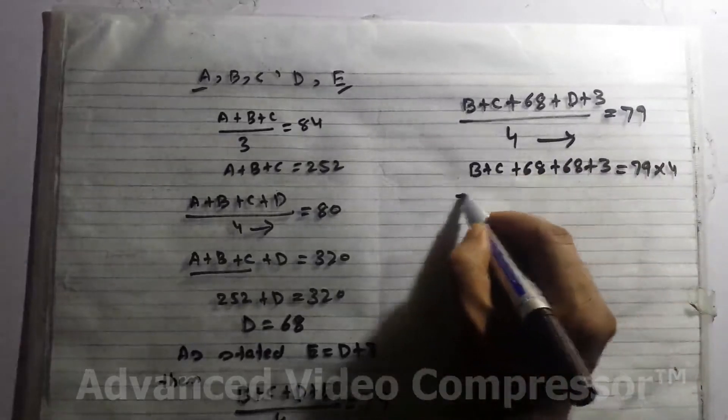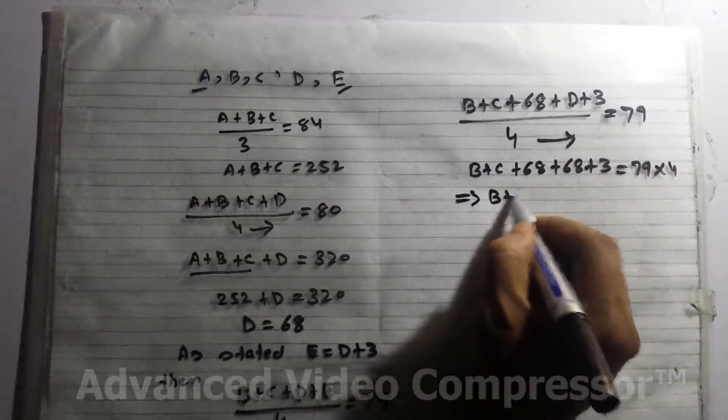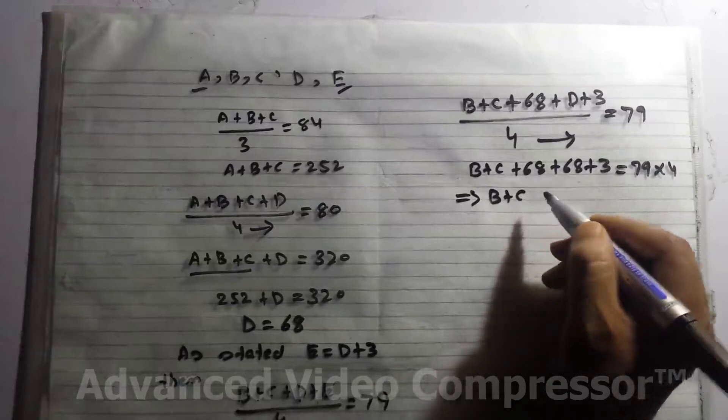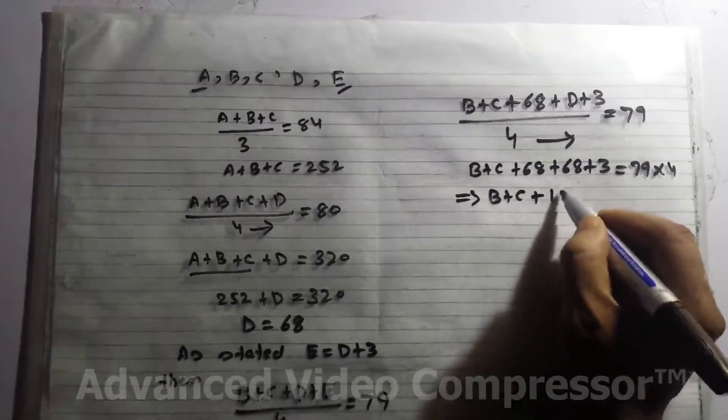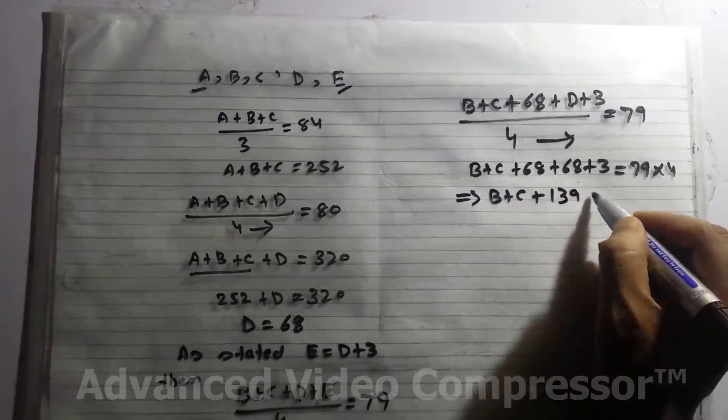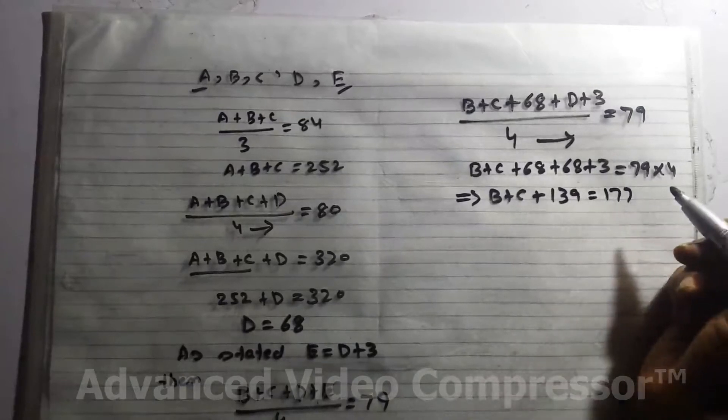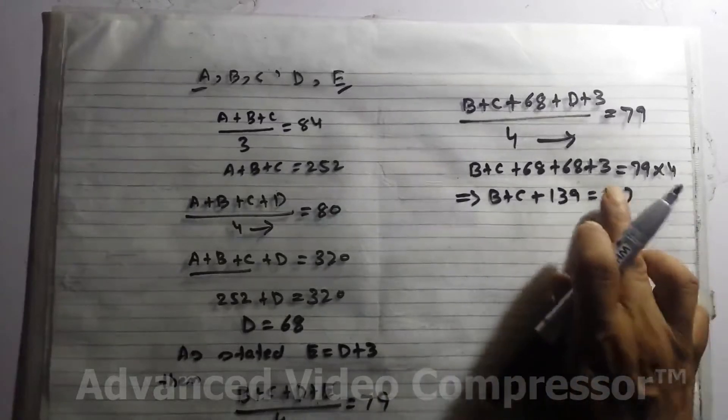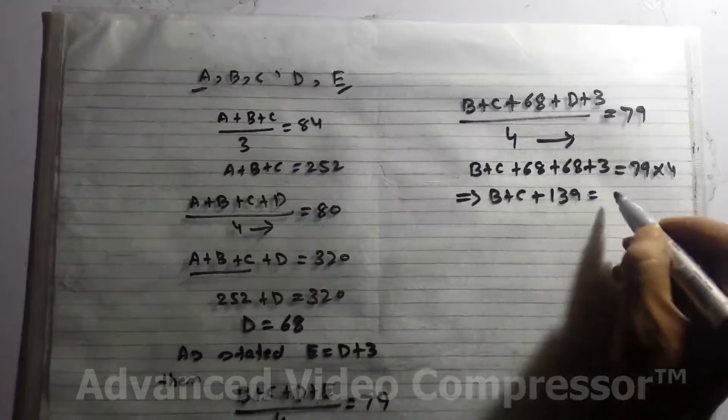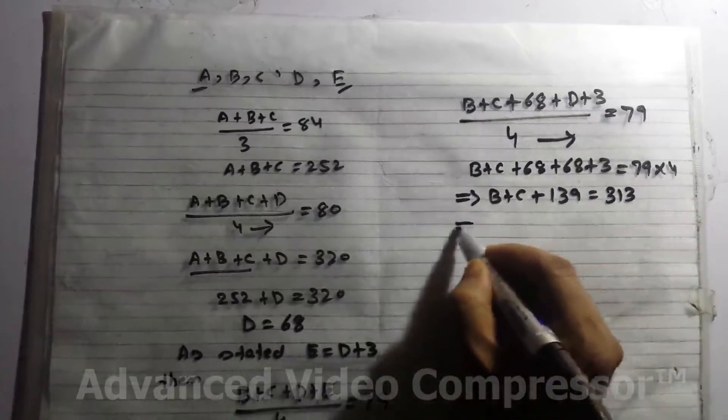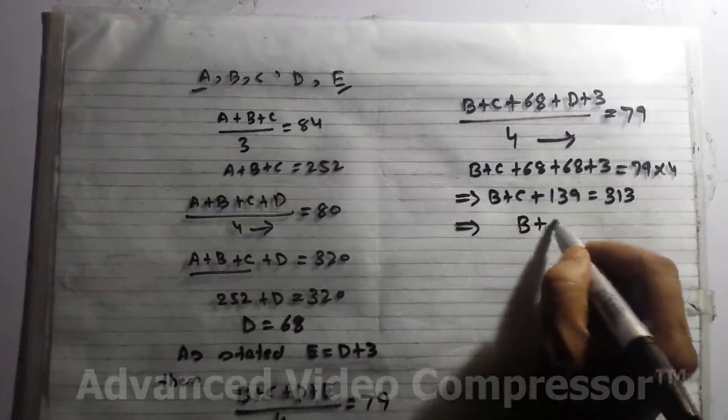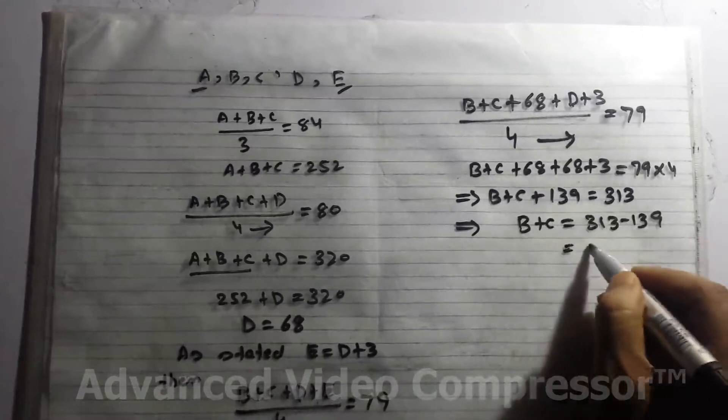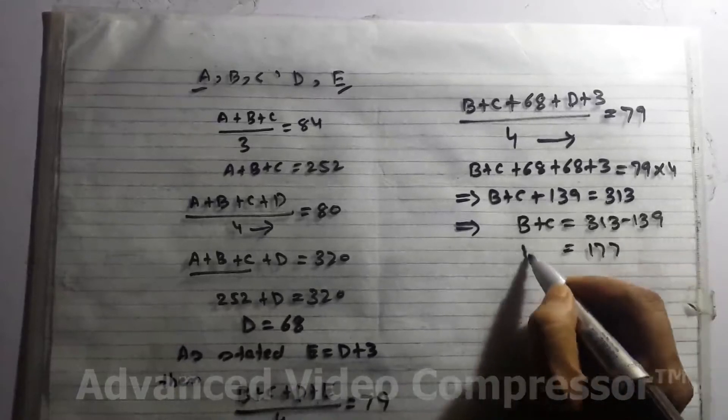This gives B + C + 139 = 316. So we got B + C = 316 - 139, which equals 177. B + C's value we calculated as 177.